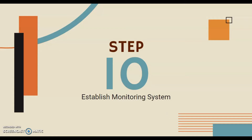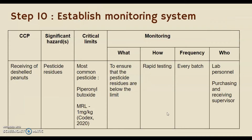I will present Step 10, which is Establish Monitoring System. Our first CCP is receiving of the shell peanut. The significant hazard found is pesticide residue. Piperonyl butoxide is the most common pesticide found in peanuts, and the maximum residue limit (MRL) is 1 mg per kg. To monitor, we must ensure pesticide residues are below the limit by conducting rapid testing for every batch, assessed by lab personnel and the purchasing and receiving supervisor.